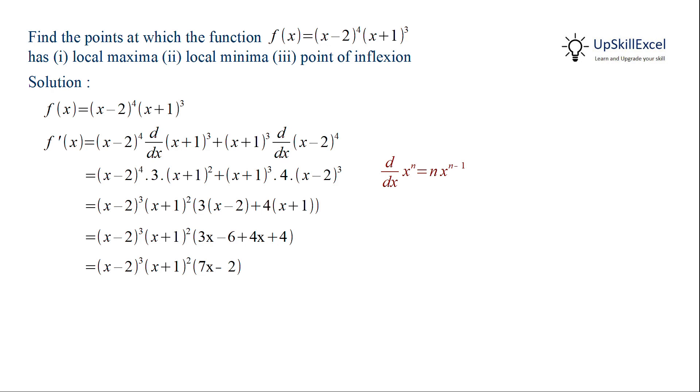Now we will set this derivative equal to 0 to find the critical points, which gives us x = 2, x = -1, and x = 2/7.